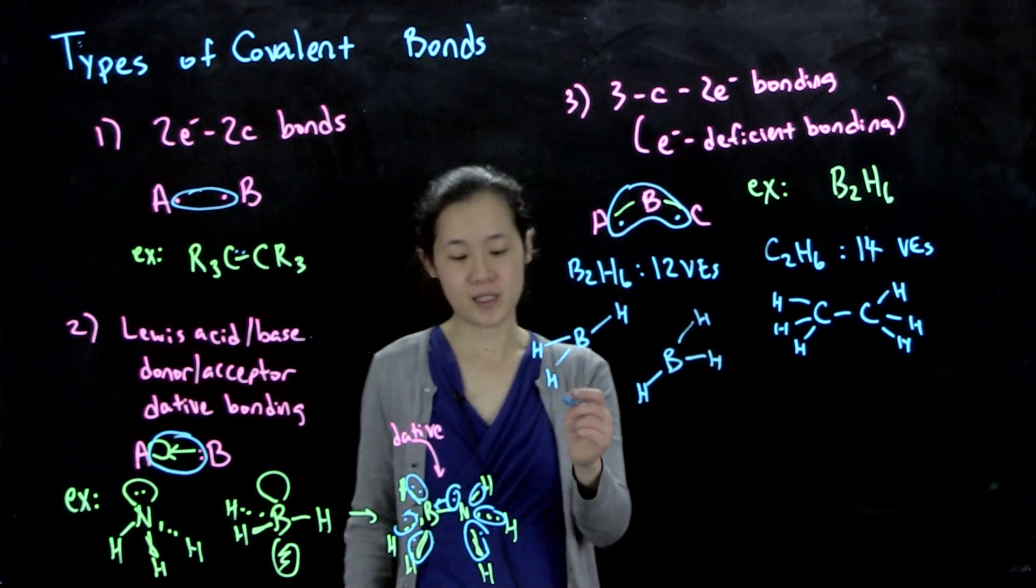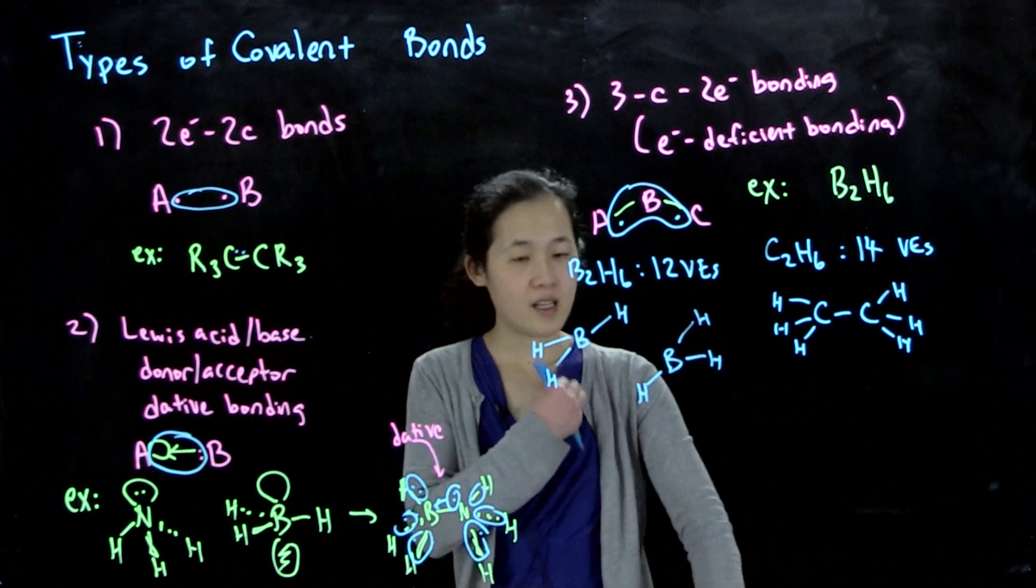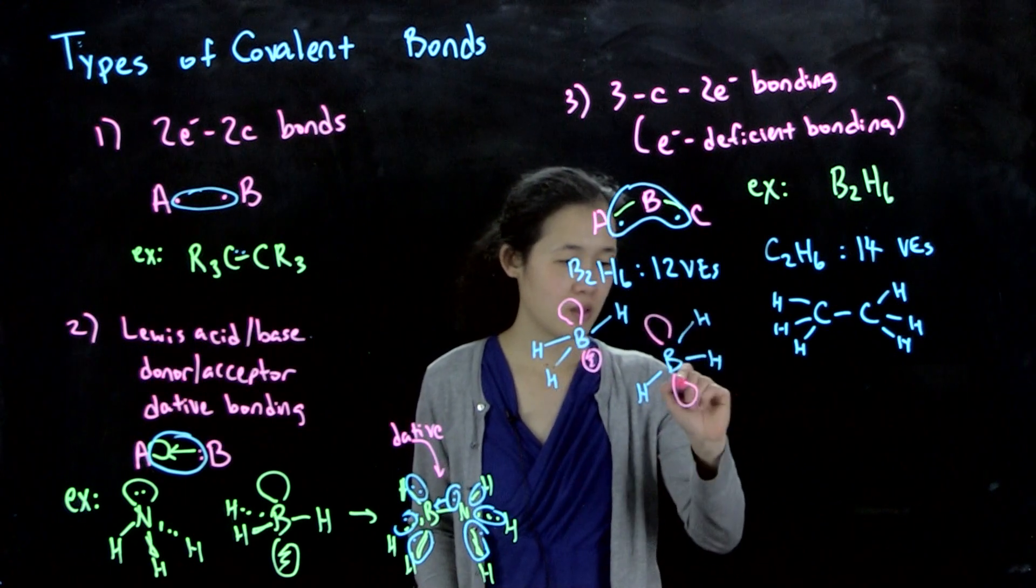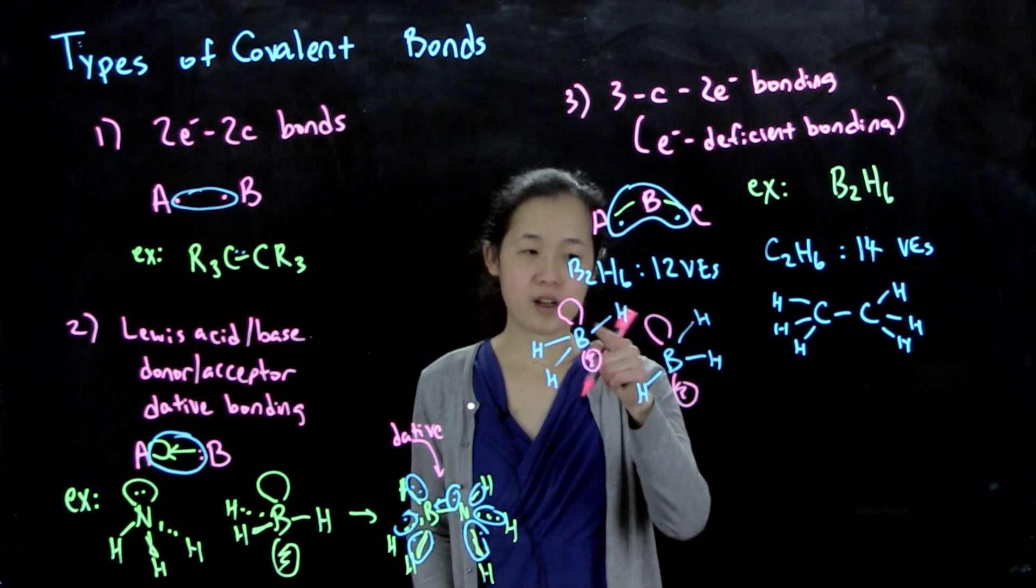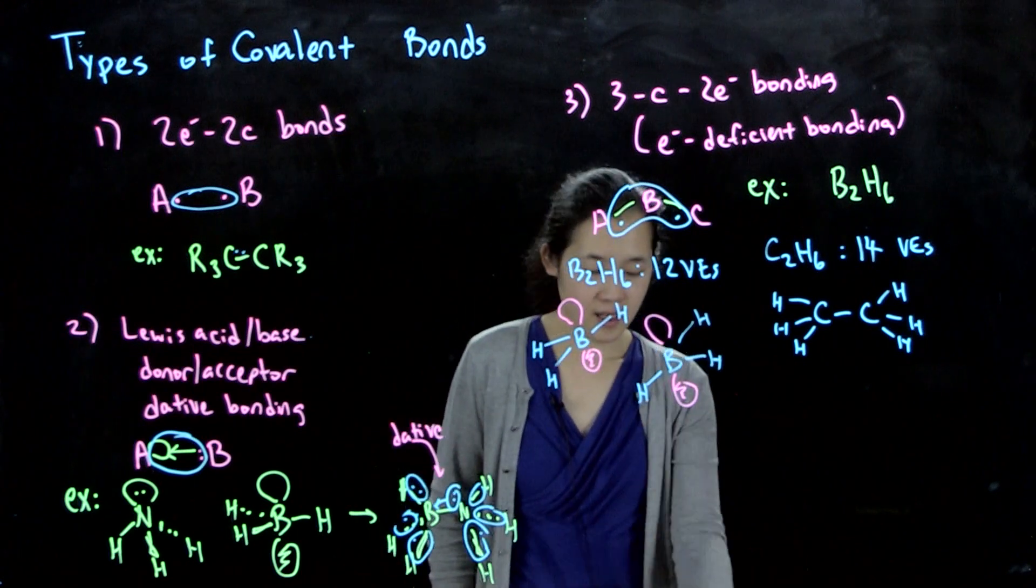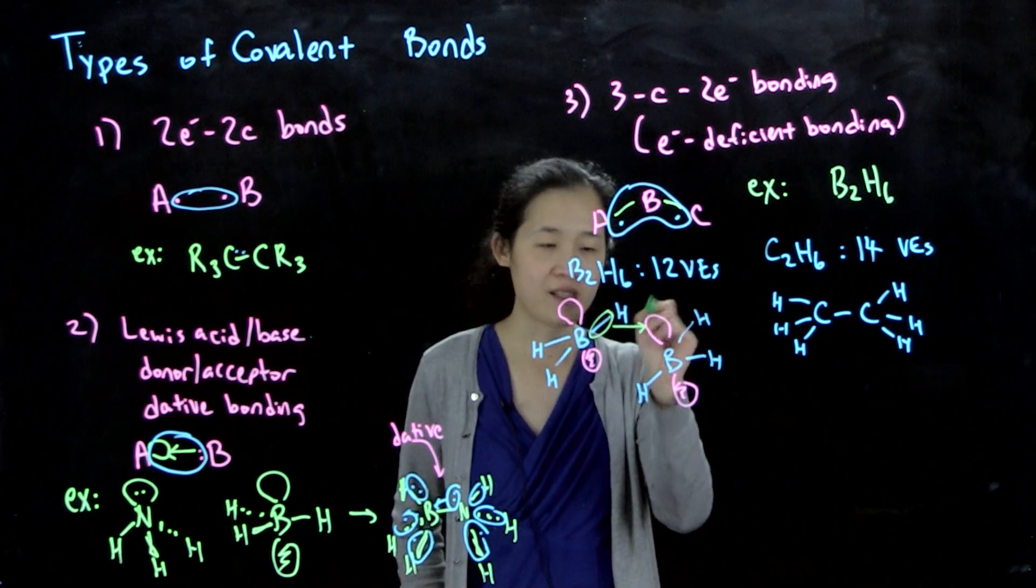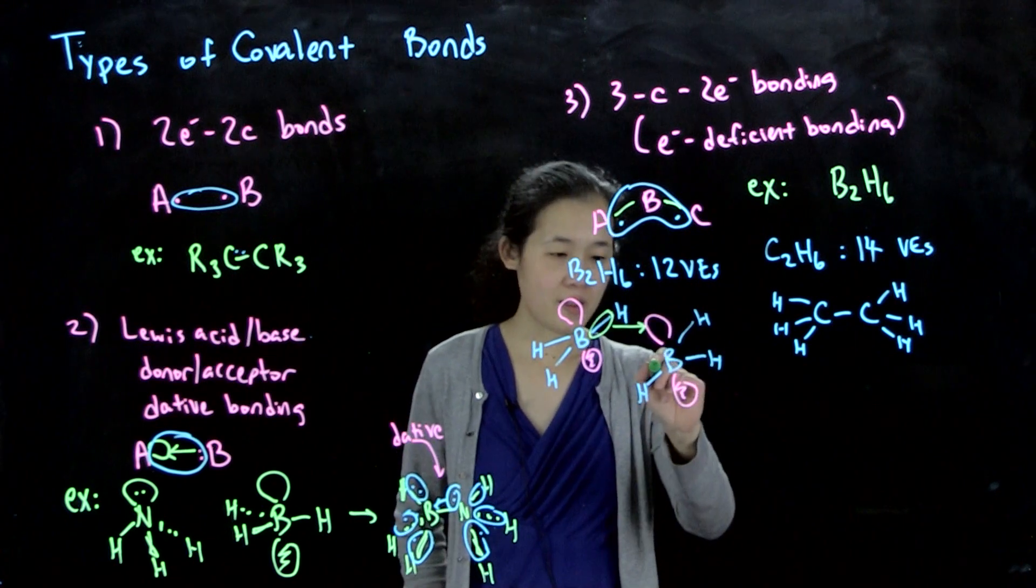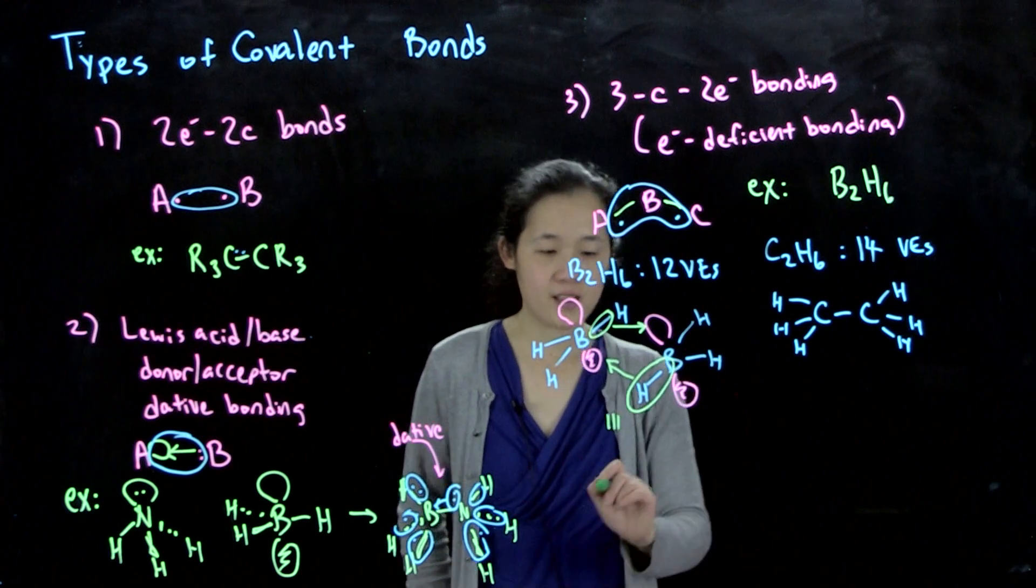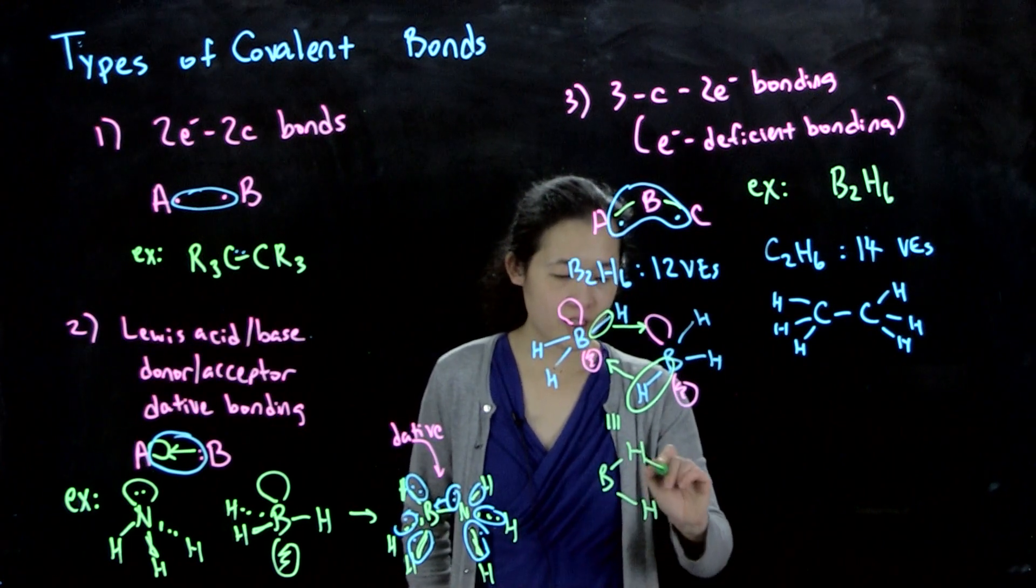Borane doesn't have a complete octet because it has that empty P orbital. One way you could think about what's happening is that we have this empty P orbital here, and we have our two electrons within this hydrogen boron bond. So this two electron bond can donate electron density into the empty P orbital, and this boron bond can donate into here. This ends up giving us B2H6.